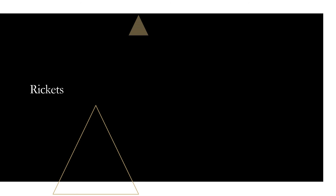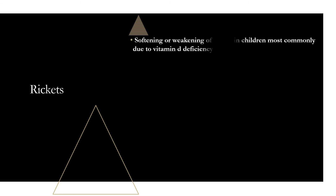Moving on to our last topic: rickets. Rickets is a softening or weakening of bones in children, most commonly due to vitamin D deficiency. Important to note: rickets is only in children. The adult version is called osteomalacia. Remember that distinction.